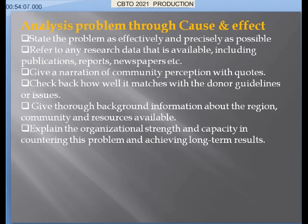State the problem as effectively and precisely as possible. Refer to any research data available — you should do data research using publication reports, newspapers, and empirical data bodies like the National Bureau of Statistics, which will give you information relevant to the problem you want to solve. Give a narration of the community perspective of the problem and quote how affected communities are by this problem, giving the donor an understanding of how intense the problem is. Check back how well your problem analysis matches with the donor guidelines and what elements of your problem analysis link to what the donor wants.